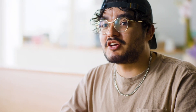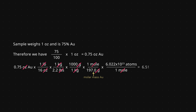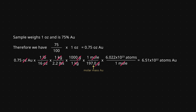We multiply the grams of gold by one mole over 197 grams, which is the molar mass of gold. We then multiply by 6.022 times 10 to the 23rd atoms over one mole. This gives us our answer: 6.51 times 10 to the 22nd atoms of gold.